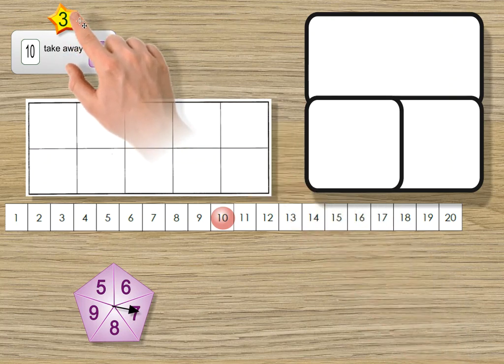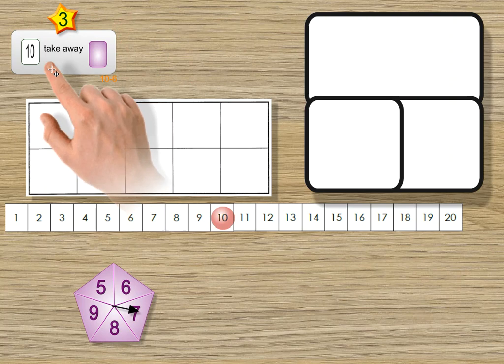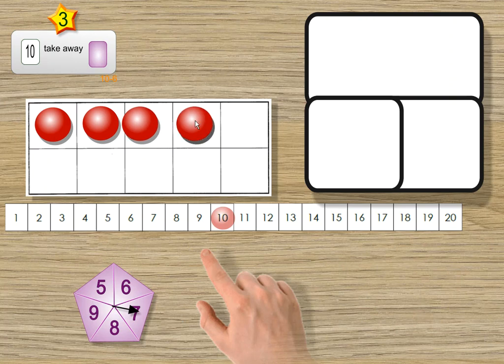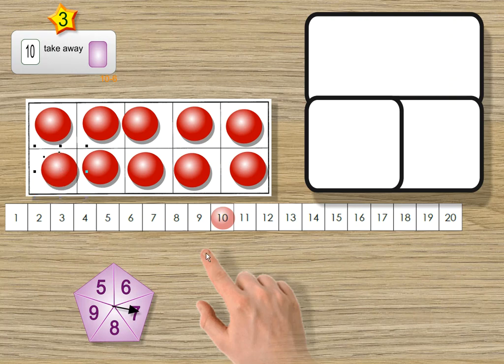Step 3 on the subtraction pathway starts with a collection of 10. So let's get 10 out. 1, 2, 3, 4, 5, 6, 7, 8, 9, 10. 10 on the tens frame.